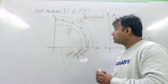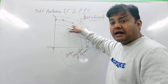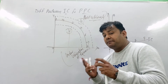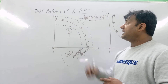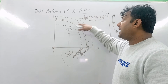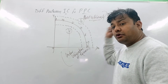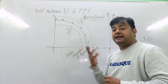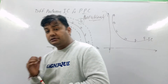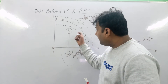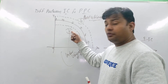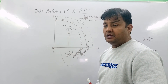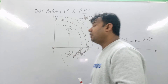The first stage on the PPC shows the best combination — points A, B, C, D, E, F — this is the best combination on the curve. If we shift to the right, it indicates growth of resources. If we talk about underutilization of resources, the shift is inward — towards the origin — meaning there is underutilization of resources.